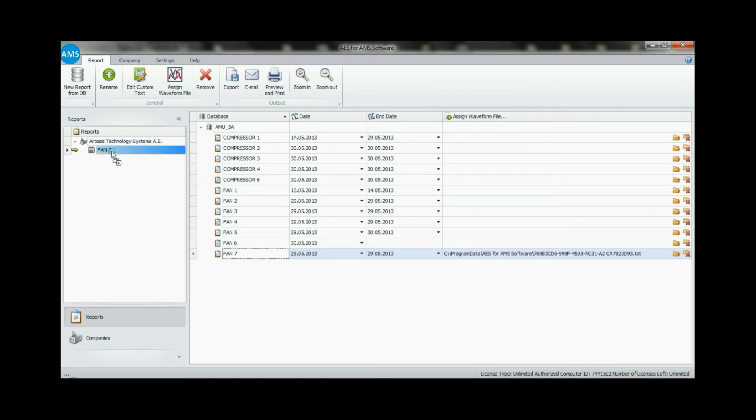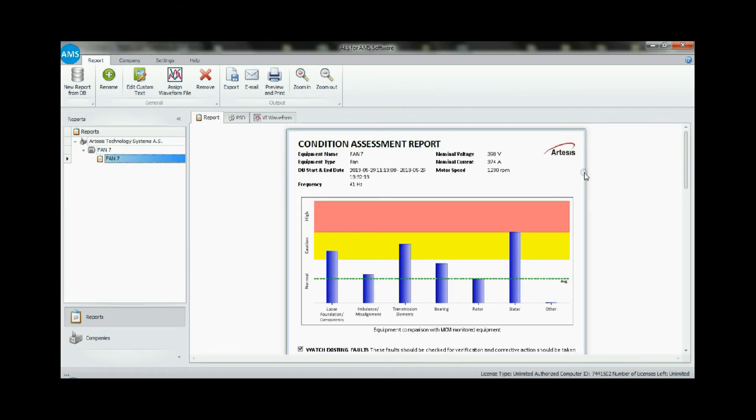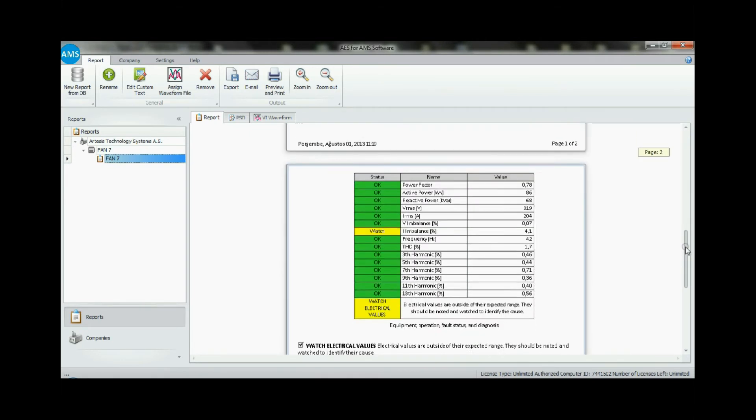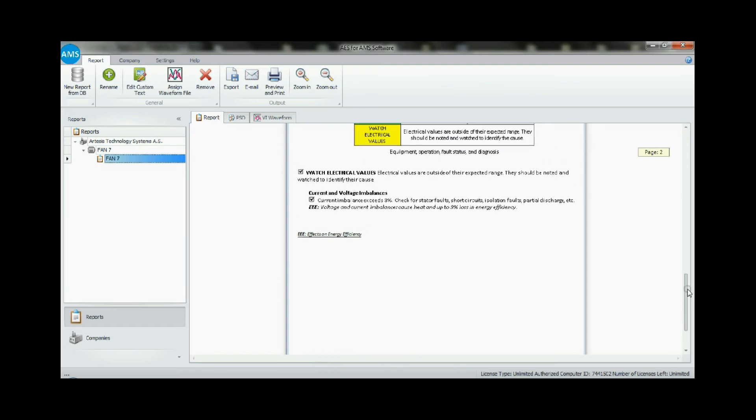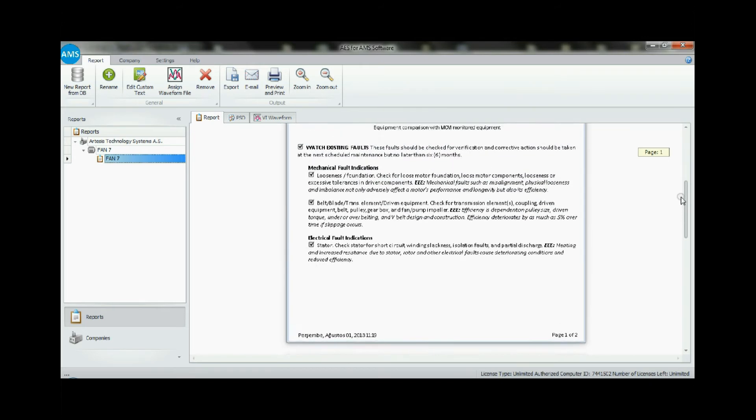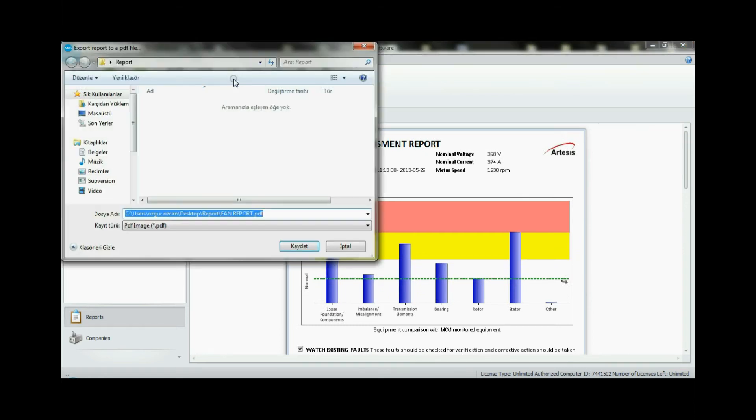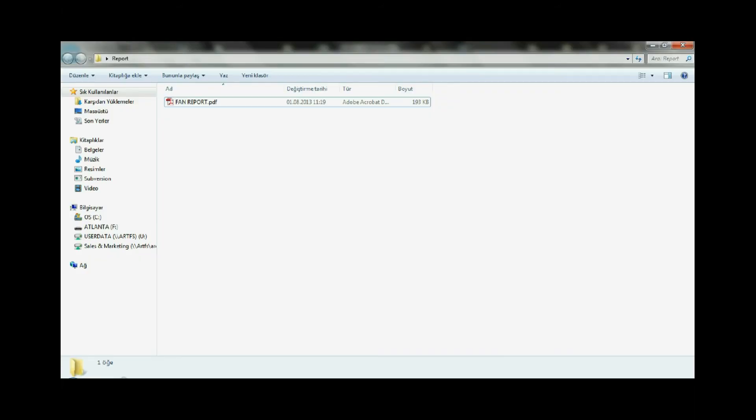This report identifies any existing mechanical or electrical problems, recommends corrective actions and how soon such actions should be carried out. The report also provides measured electrical parameters such as power factor, active and reactive power, voltages, currents and their imbalances, as well as harmonics. If these electrical parameters are above their expected values, a warning is issued for the attention of the user.